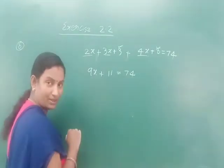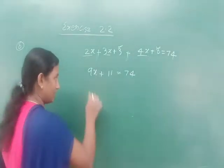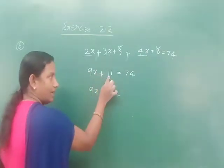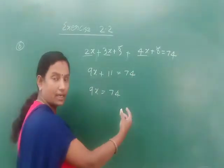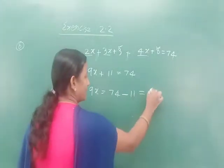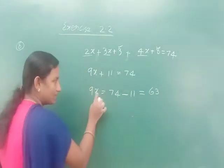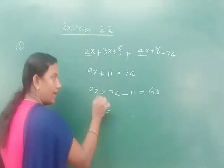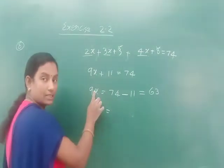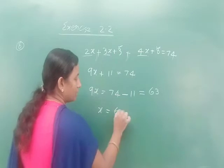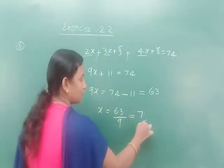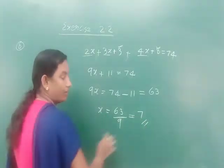This is a linear equation. So 9x = 74 - 11 = 63. Shifting the constant to the right side gives subtraction: 9x = 63. Then x = 63 ÷ 9 = 7.